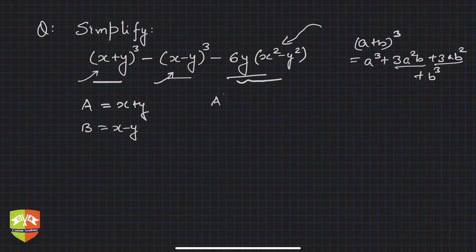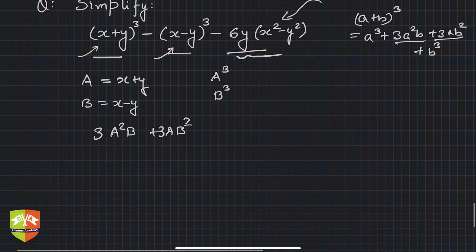But what about the 3a²b + 3ab² terms? If you see, this term will be 3(x+y)²(x-y), and this will be 3(x+y)(x-y)².